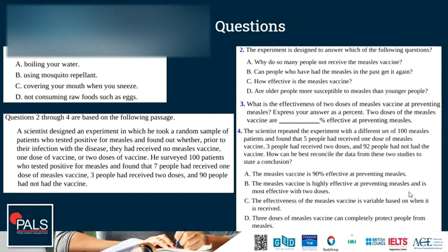Some questions on this presentation. What is the best way to prevent salmonella poisoning? Options: boiling your water, using mosquito repellent, covering your mouth when you sneeze, or not consuming raw food such as eggs? The correct answer is D. We saw that salmonella infection can be caused by eating raw foods — this is how salmonella spreads.